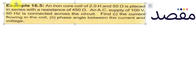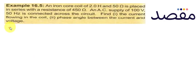Let's look at our data. We have the inductor value which is 2 henry, and resistance is given as two values. So our total resistance is 50 plus 450, which equals 500 ohms.